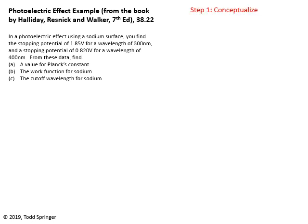The first step when approaching a problem is to try to conceptualize it — process the information, identify what it's asking for, what you're given, and draw a picture if you can. I'm going to circle the things that are important in the problem and box the things being asked for. I've circled in green the important information — the material, and the two different stopping potentials and two different wavelengths. That's basically all the information we have. Put a box around the things you're trying to find — it's spelled out very clearly here.